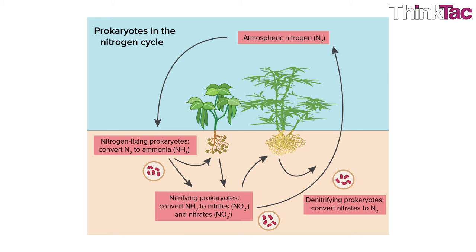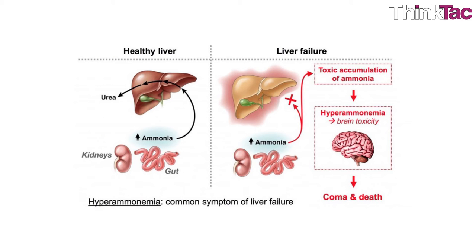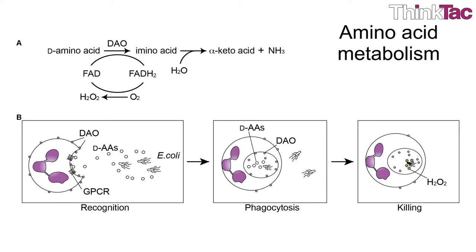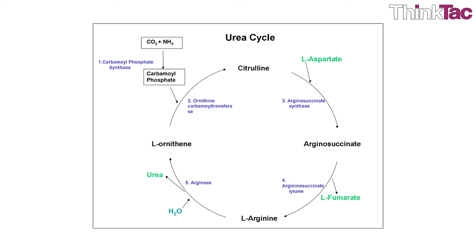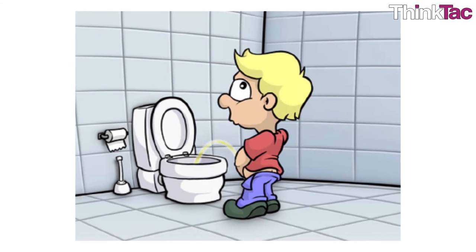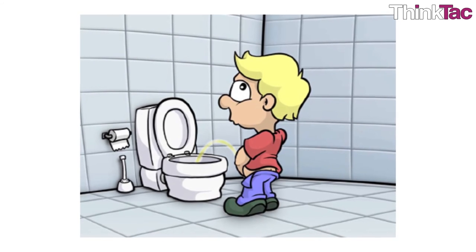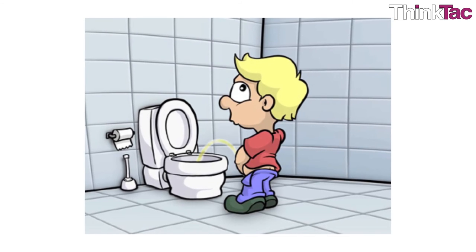Some plants rely on ammonia and other nitrogenous wastes incorporated into the soil by decaying matter. Ammonia also plays a role in both normal and abnormal animal physiology. It is biosynthesized through normal amino acid metabolism and is toxic in high concentrations. The liver converts ammonia to urea through a series of reactions known as the urea cycle, and this is eventually passed in urine, giving it its distinct ammonia-like smell.